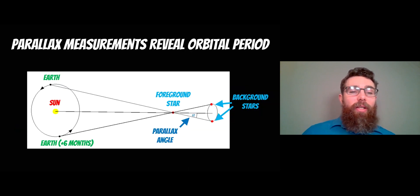In order to calculate that, we need to know some things about Earth's orbit first. For example, we need to calculate the orbital period, and we can do that using parallax measurements.